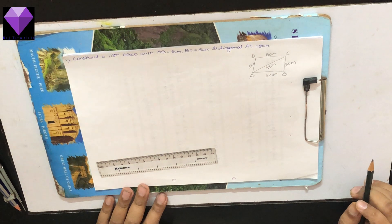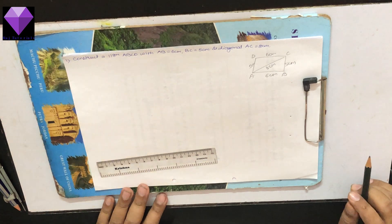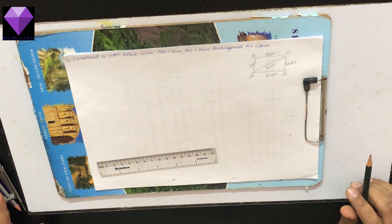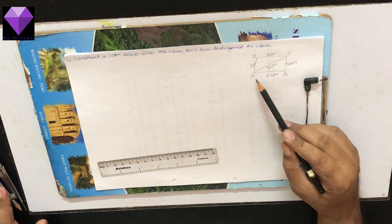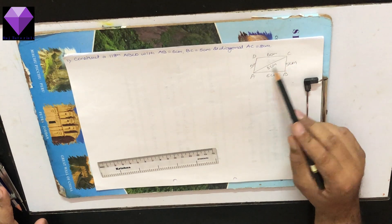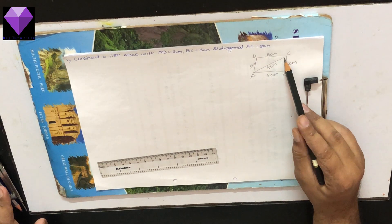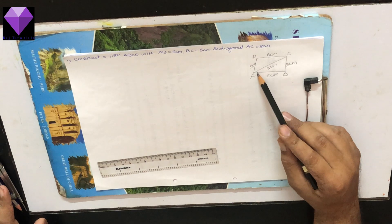Hello students, today we are going to construct a parallelogram ABCD with AB equal to 6 cm, BC equal to 5 cm, and one diagonal AC equal to 8 cm.